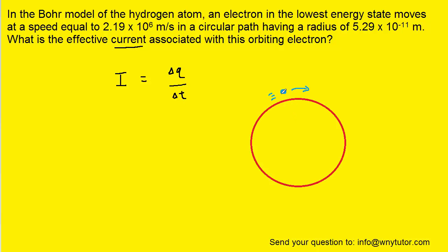Now the question mentions that the electron is moving in a circular path, so we can make a simple drawing showing that. And we know from perhaps a geometry class that the distance around the length of a circle is simply 2 pi times the radius.